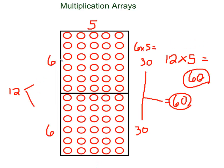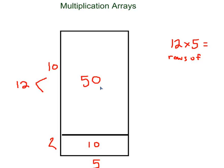So imagine that we had split the array like this. We have not changed our overall array — it is still 12 by 5. But now we have 10 rows and 2 rows. Can you see it when the pieces are not there? It's still the same thing. So now I have 50 plus 10 altogether — I have 60 whole pieces in my entire array. So 12 rows of 5 is 60.